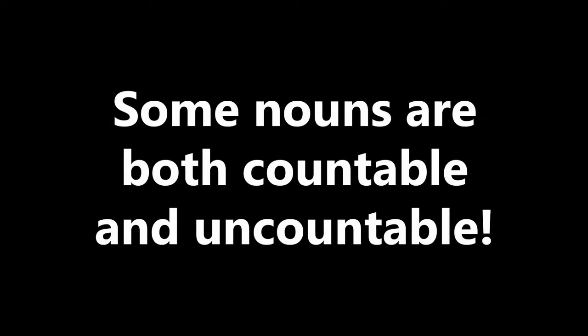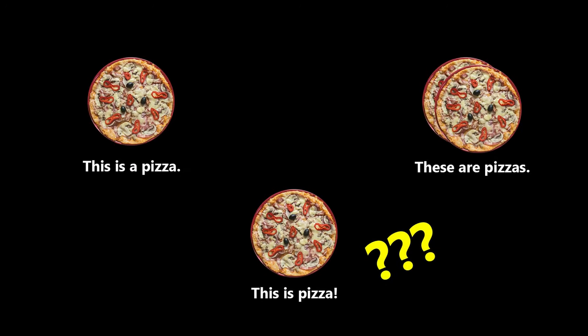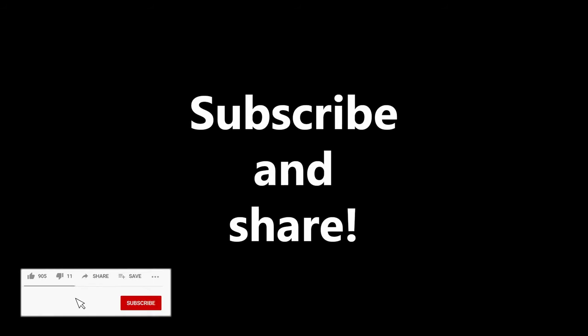This video describes the basic rules for talking about countable and uncountable nouns. But if we look at other examples, things become more complicated. For example, why are some nouns both countable and uncountable? Why can we also say 'this is pizza'? I will answer these and other questions in a future video, so be sure to subscribe and click the bell icon.